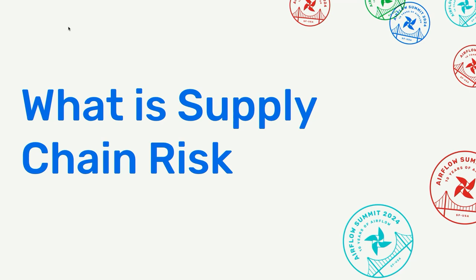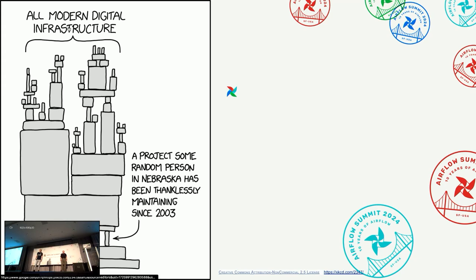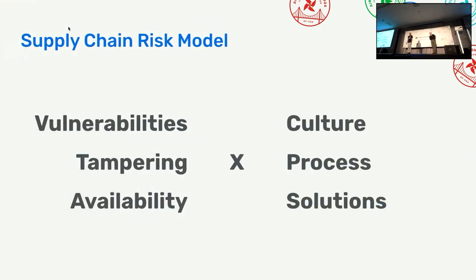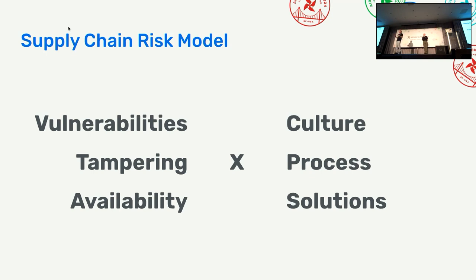We're going to start by talking about software supply chain risk — what it is, what it means, and why it's important to Airflow. This is the obligatory XKCD reference. If you haven't seen this image, it's out there — this is not hyperbole, this is actually what's happening every day in almost every software project. So how do we think about software supply chain risk? There are really two dimensions: on the risk side we have vulnerabilities, tampering, and availability.